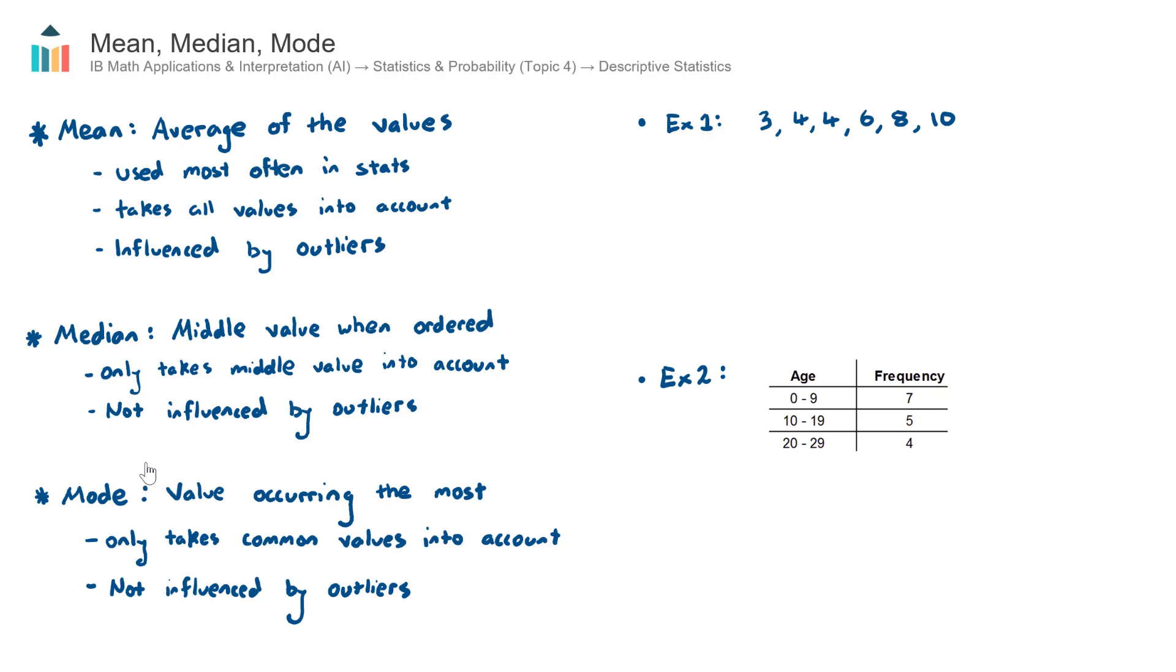The final one, which is probably the least used, is the mode, which is the value occurring the most. It only takes into account common values, but one positive is that it is not influenced by outliers.